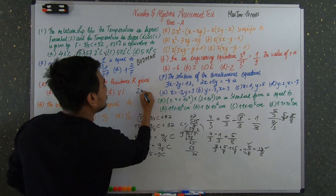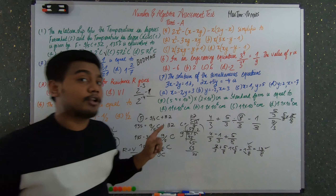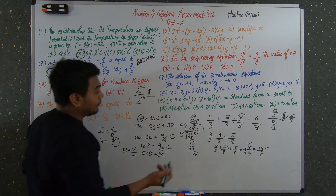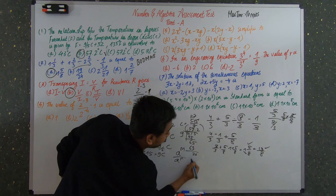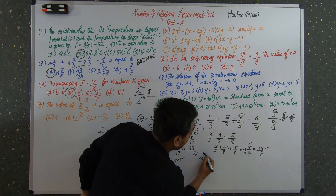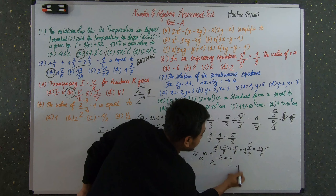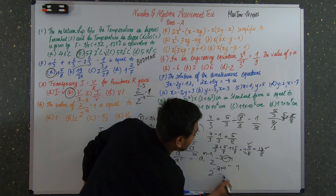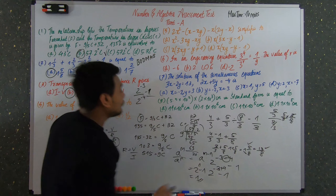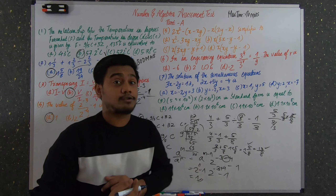Question four: find the value of 2^(−3) ÷ 2^(−4) − 1. Apply the law of indices: a^m ÷ a^n = a^(m−n). So 2^(−3) ÷ 2^(−4) = 2^(−3−(−4)) = 2^(−3+4) = 2^1 = 2. Then 2 − 1 = 1. So 1 is the correct answer for question four. Easy — no calculator needed!